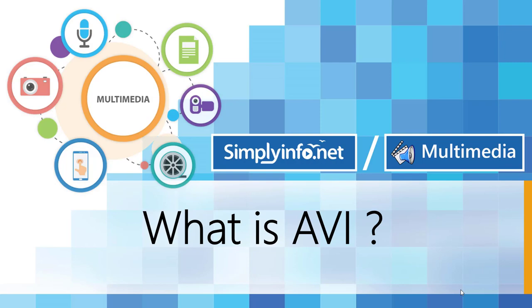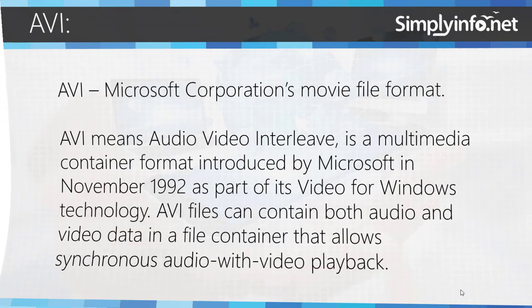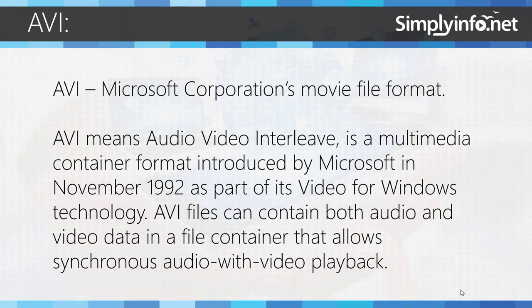What is AVI? AVI, Microsoft Corporation's Movie File Format, means Audio Video Interleave. It is a multimedia container format introduced by Microsoft in November 1992 as part of its Video for Windows technology. AVI files can contain both audio and video data in a file container that allows synchronous audio with video playback.